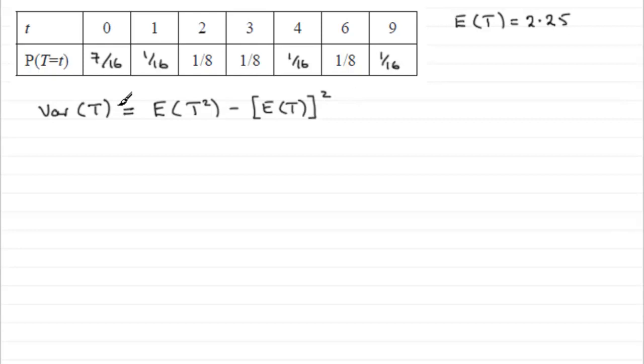You've probably seen this before with the random variable x, var x being e of x squared minus e of x all squared. Now from the previous part, we've already worked out what e of t was, it was 2.25. So we've taken care of this bit.